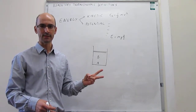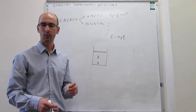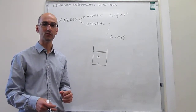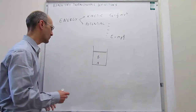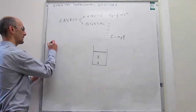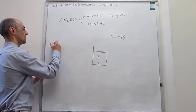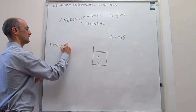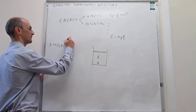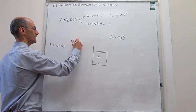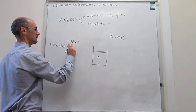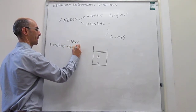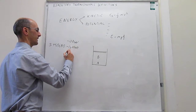So we have defined system and surroundings. Going back to the system, there are going to be three types of systems: open, closed, or isolated.